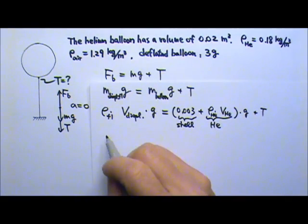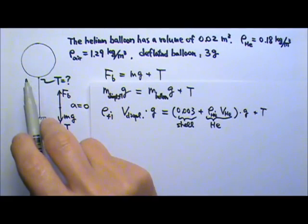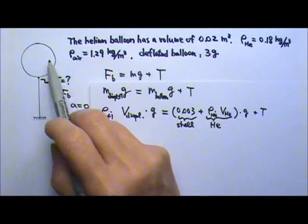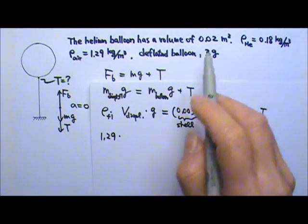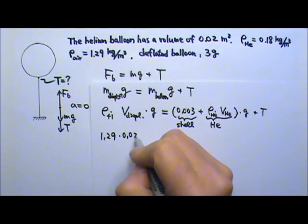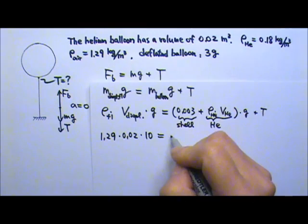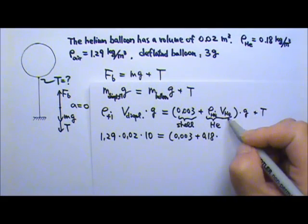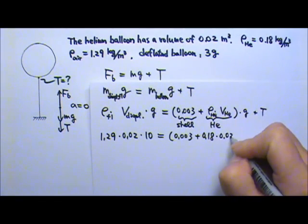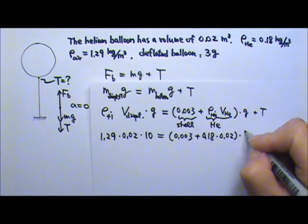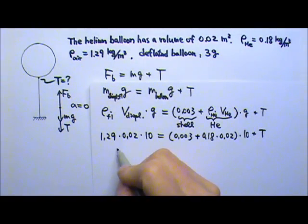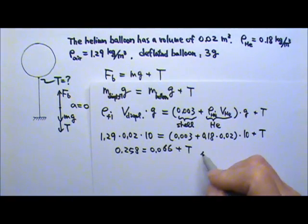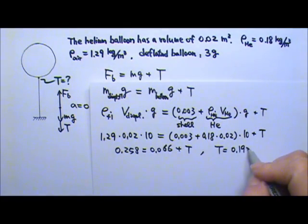The fluid the balloon is submerged in is air, so this is the air's density: 1.29. The volume displaced — the entire balloon displaces the air — so the displaced volume is the volume of the balloon, which is 0.02. I'm going to use 10 for g. The mass of the shell is 0.003 kilograms. The density of helium is 0.18, and the volume of the helium is also the volume of the balloon, 0.02. Using 10 for g, plus T, this gives 0.258 on this side, and 0.066 plus T on that side. So the tension in the string is 0.192 newtons.